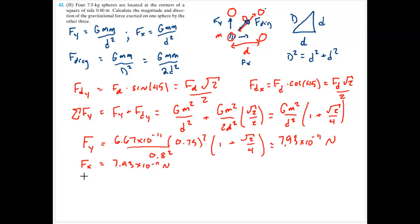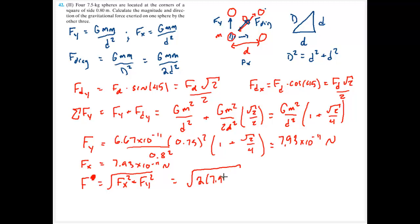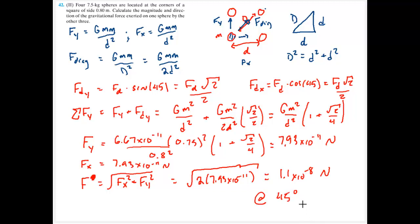All of the directions are different. The net force is the square root of Fx squared plus Fy squared, which equals the square root of 2 times 7.93×10⁻¹¹ newtons, giving 1.1×10⁻⁸ newtons, at 45 degrees based on the symmetry of the problem.